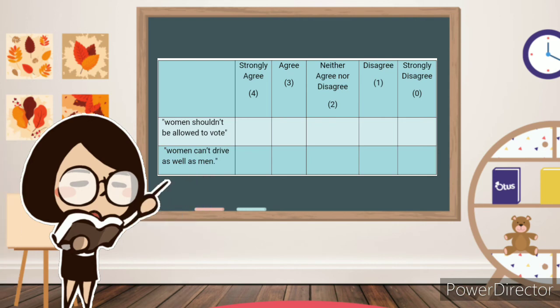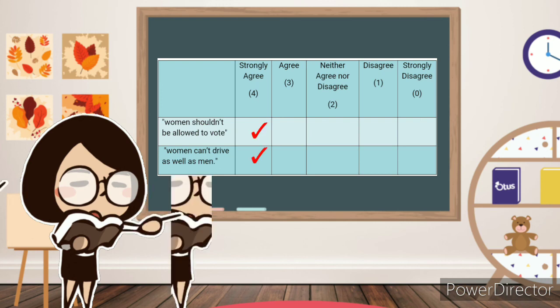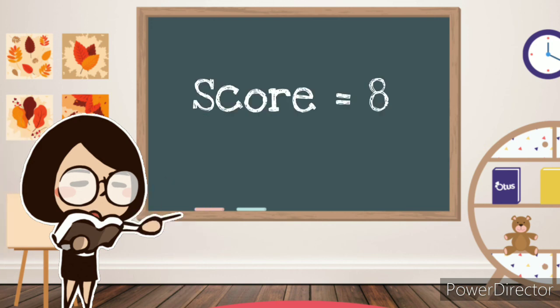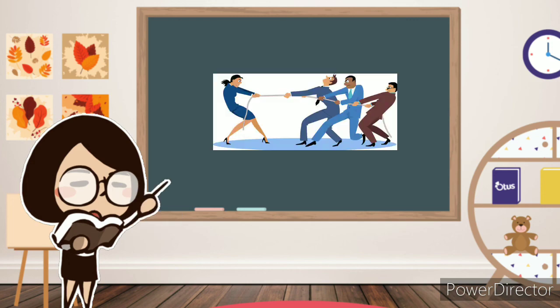If a respondent answered strongly agree to two statements expressing prejudice ideas, his or her overall prejudice score would be 8, indicating a very high degree of prejudice against women.